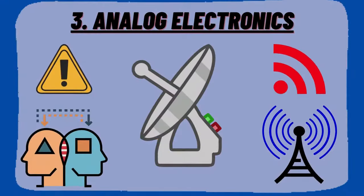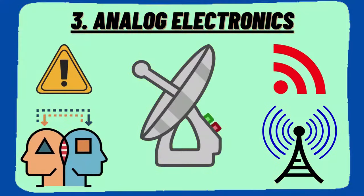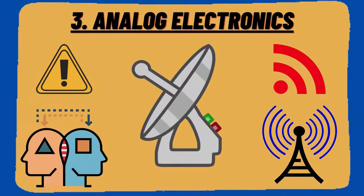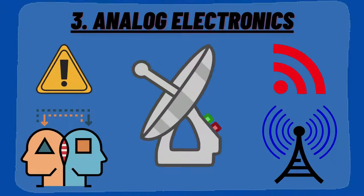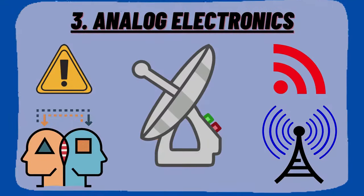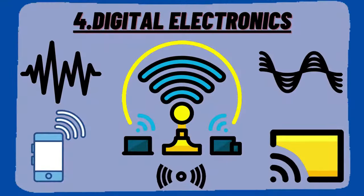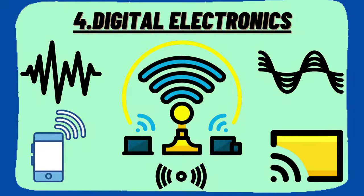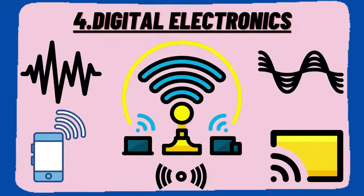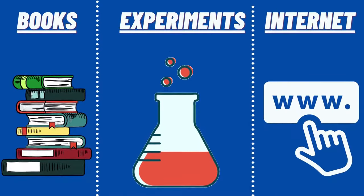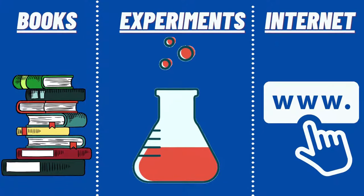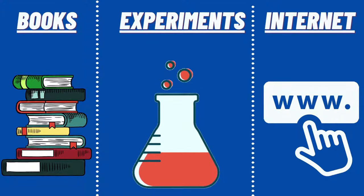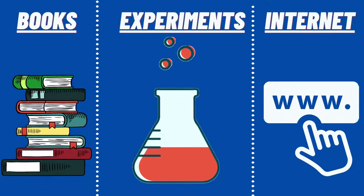The third important thing to learn is analog electronics, which is a branch of electronics dealing with continuously variable signals. It is used in radio and audio equipment, and in applications where signals from analog sensors are converted into digital signals. The fourth thing is digital electronics, a sub-branch dealing with digital signals for processing and controlling various systems and subsystems. Make use of the internet and books to gain vast knowledge, and try to do simple experiments to understand the concepts efficiently.